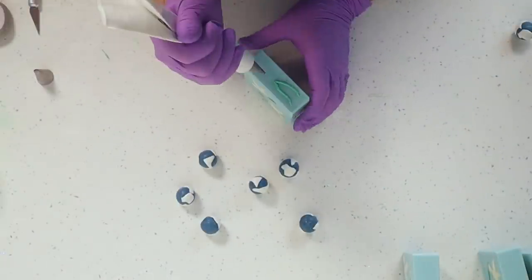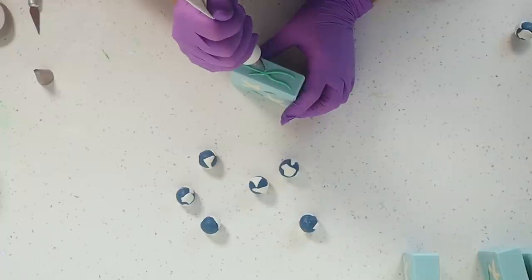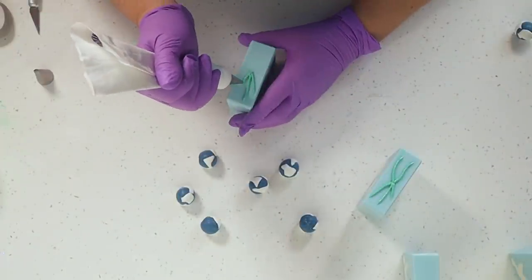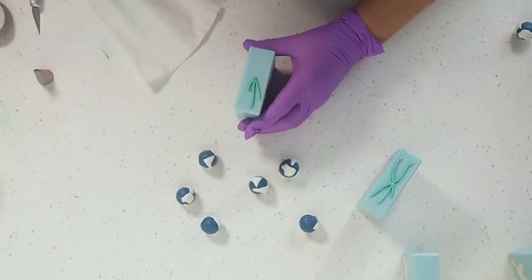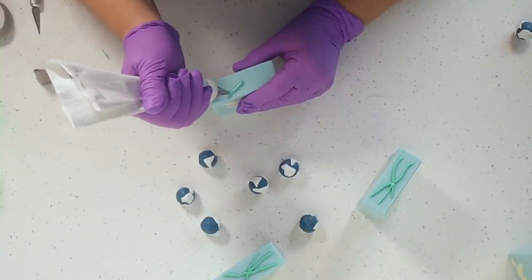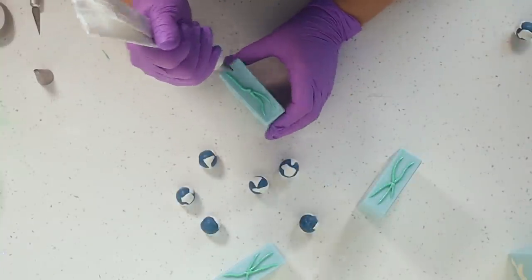I've actually started off with just a normal little round tip—I think it's a number three tip that I've got here—and I'm just going to pipe some stems on the top of the bars. Then once I've done all of those, I'll then swap to that little leaf tip and then pipe in some little leaves.